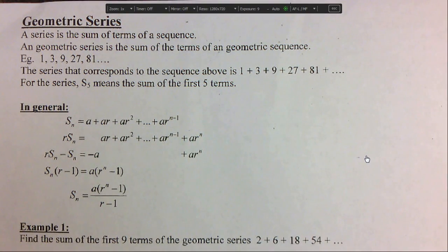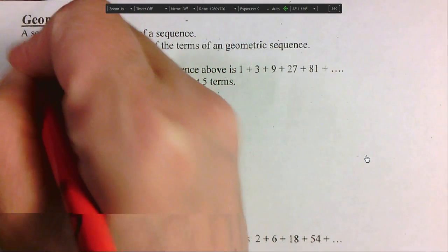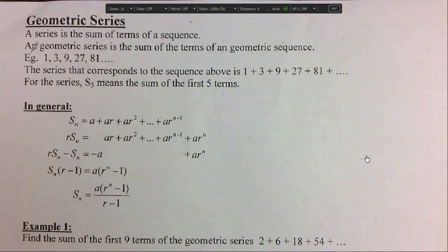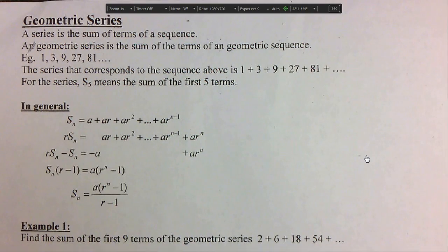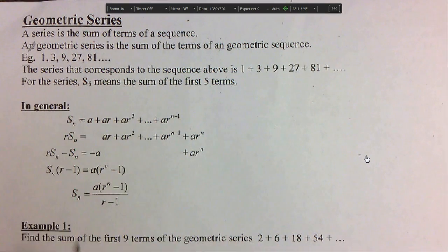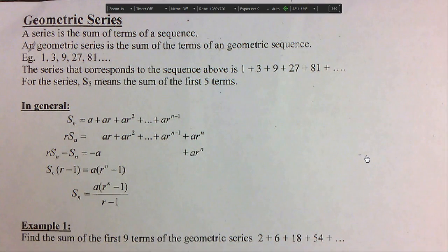A series is the sum of the terms of a sequence. We saw that already with arithmetic series. A geometric series is the sum of the terms of a geometric sequence. Let's look at this geometric series: 1, 3, 9, 27, 81.